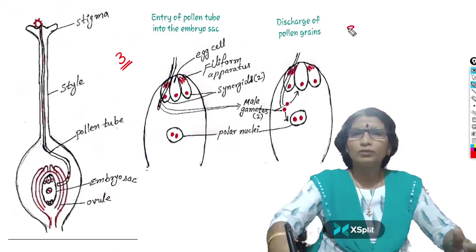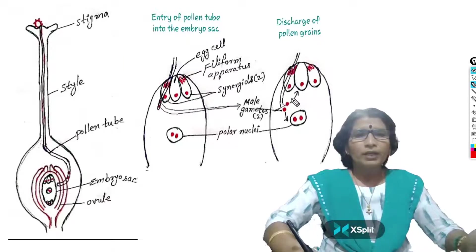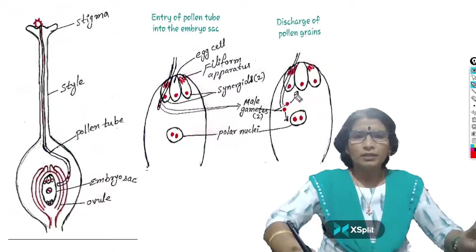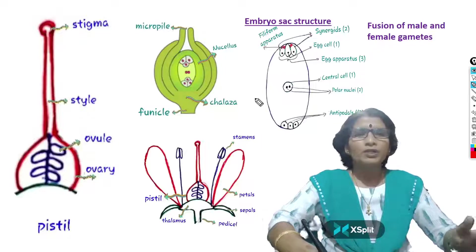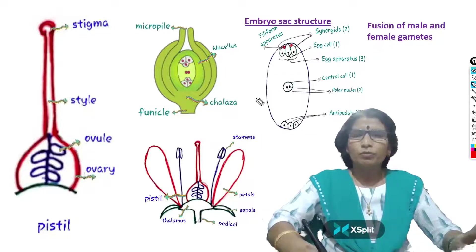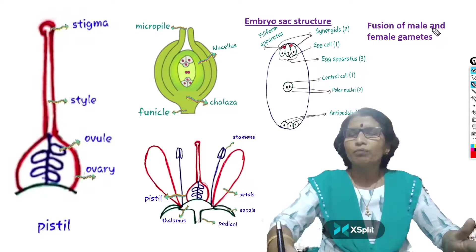Overall, eight marks are given for this answer. While explaining, I will use many diagrams, but all these diagrams do not need to be drawn in the examination. Now I will start the explanation of fertilization in angiosperms. What is fertilization? The simple definition is the fusion of male and female gametes.